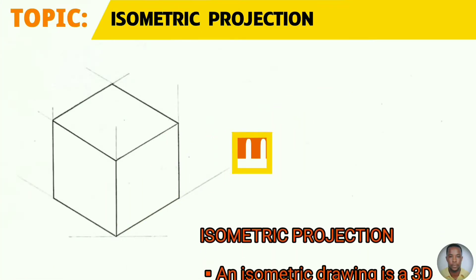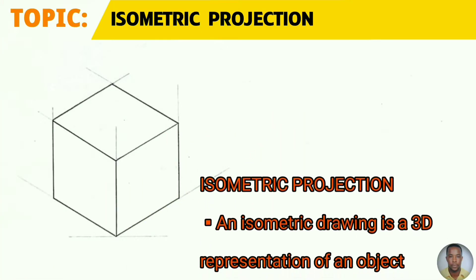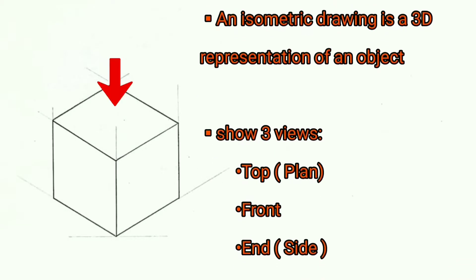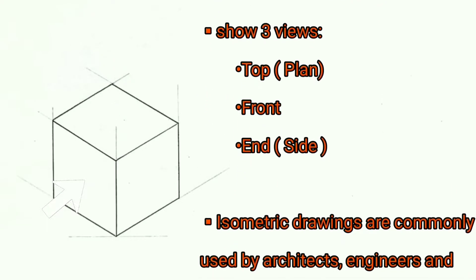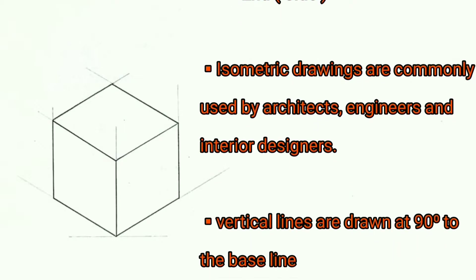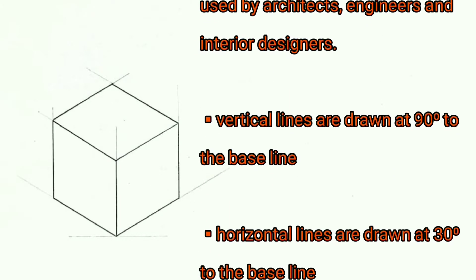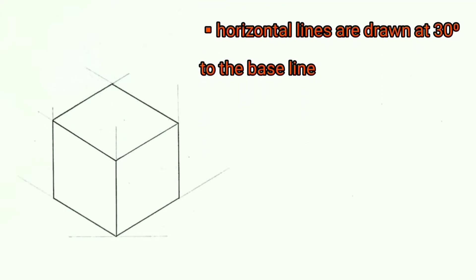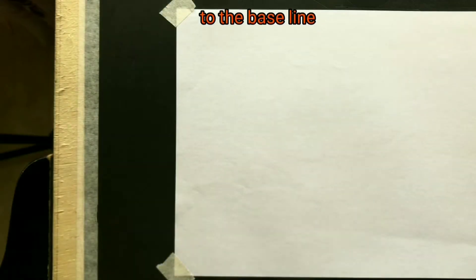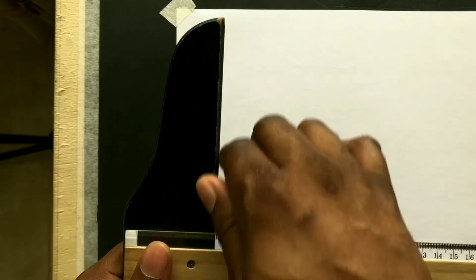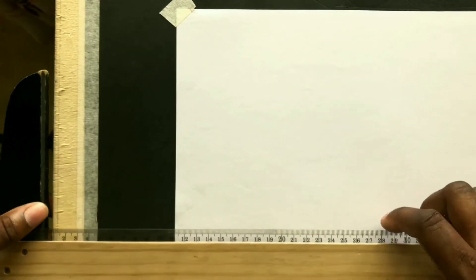An isometric projection is a three-dimensional representation of an object showing us the top view, the front view, and the end view. Isometric drawings are commonly used by engineers and architects, just to name a few. Special precaution must be taken when using your T-square — the head of the T-square must always be held firmly against the side of your drawing board or table.